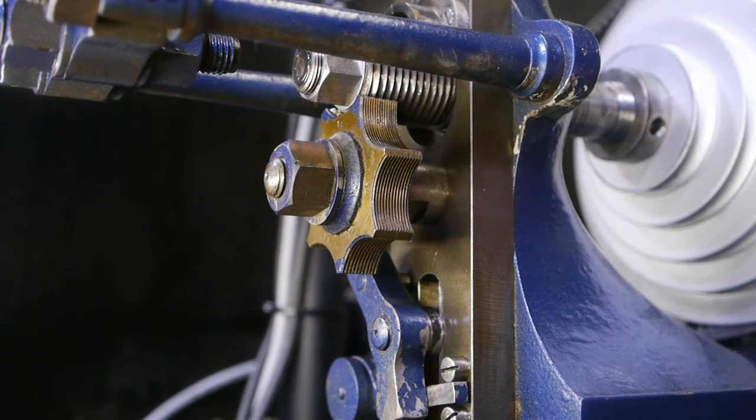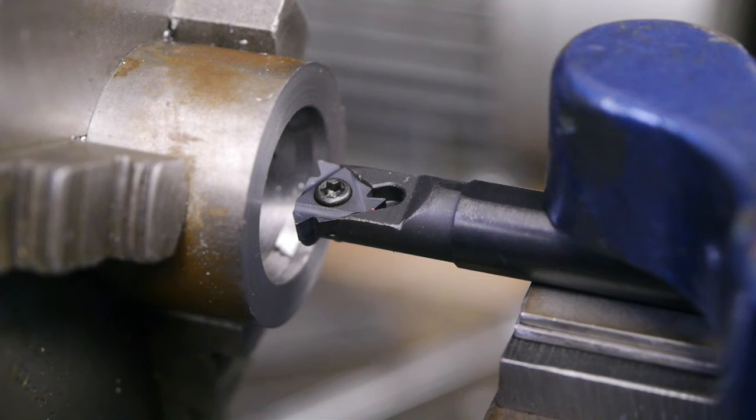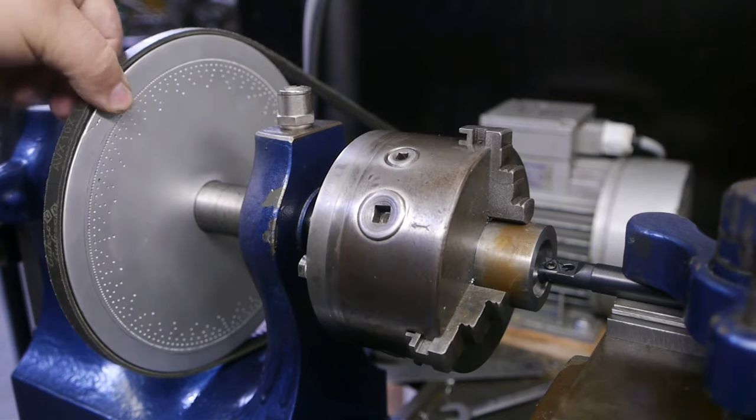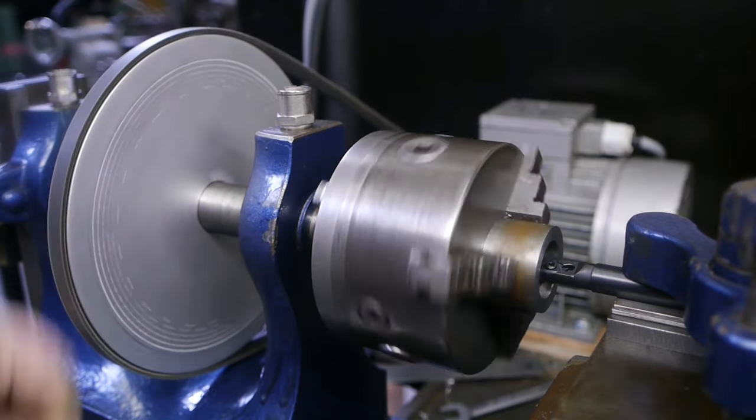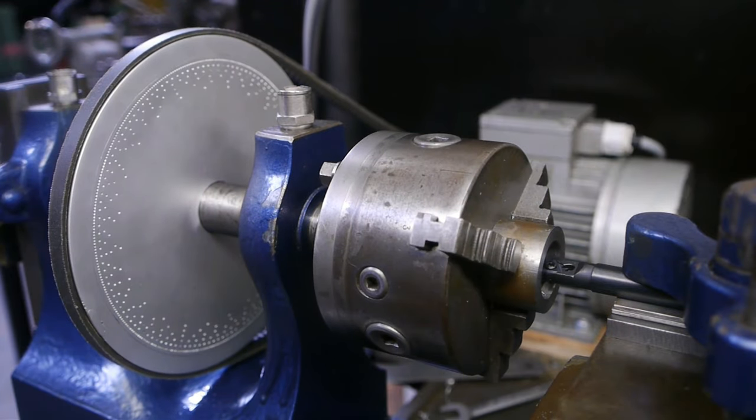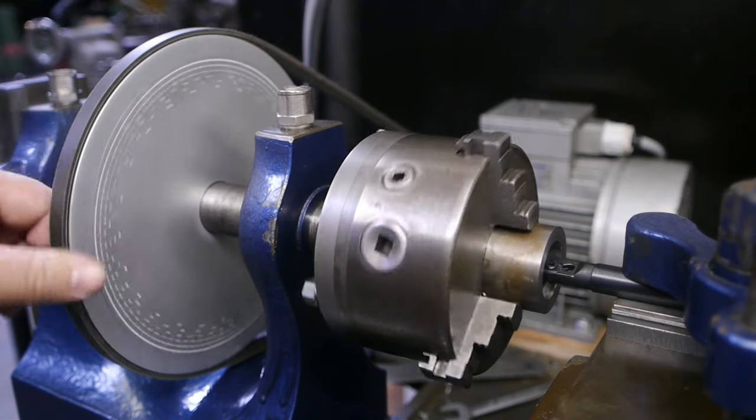As you can see, you can only cut rather short threads because you will quickly run out of template, but it should be more than enough for what I'm trying to do here. I mounted my new internal threading tool on the tool post and I'm just about ready to do my first threading job using inserts. I loosened up the belt and I'm going to turn the spindle by hand. At slow speeds the electric motor doesn't have enough power anyway.